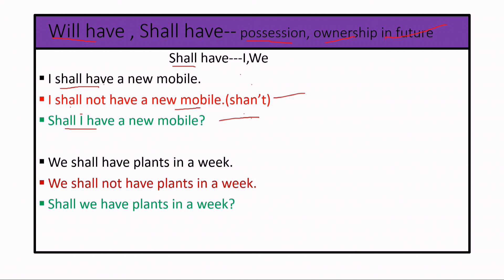Let's see another example. 'We shall have plants in a week.' Negative sentence: 'We shall not have plants in a week,' or 'We shan't have plants in a week.' Interrogative sentence: 'Shall we have plants in a week?'